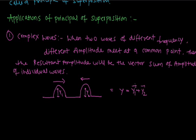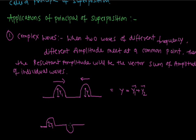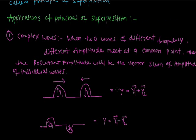The resultant displacement is y1 vector plus y2 vector. If one wave has amplitude y1 and another wave is in a different phase with amplitude y2, then the resultant amplitude y will be equal to y1 vector minus y2 vector.